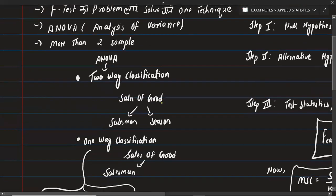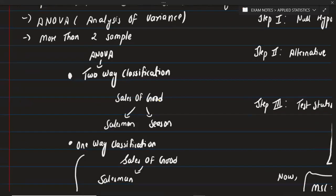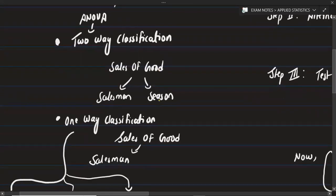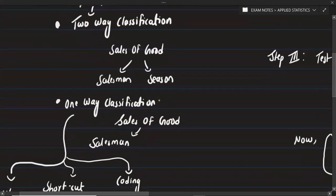Consider the sales of goods. There are different factors that affect sales of goods. The salesman's effect can impact sales, and the season can also have an impact on sales. When only one factor — say the salesman — is responsible for sales of goods, that is one-way classification. When two factors affect it, that is two-way classification.